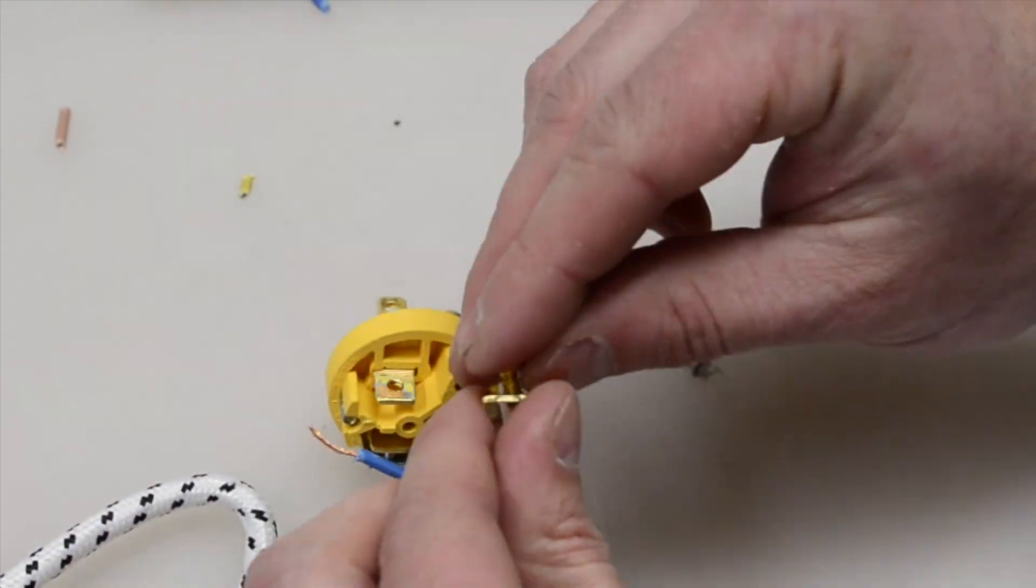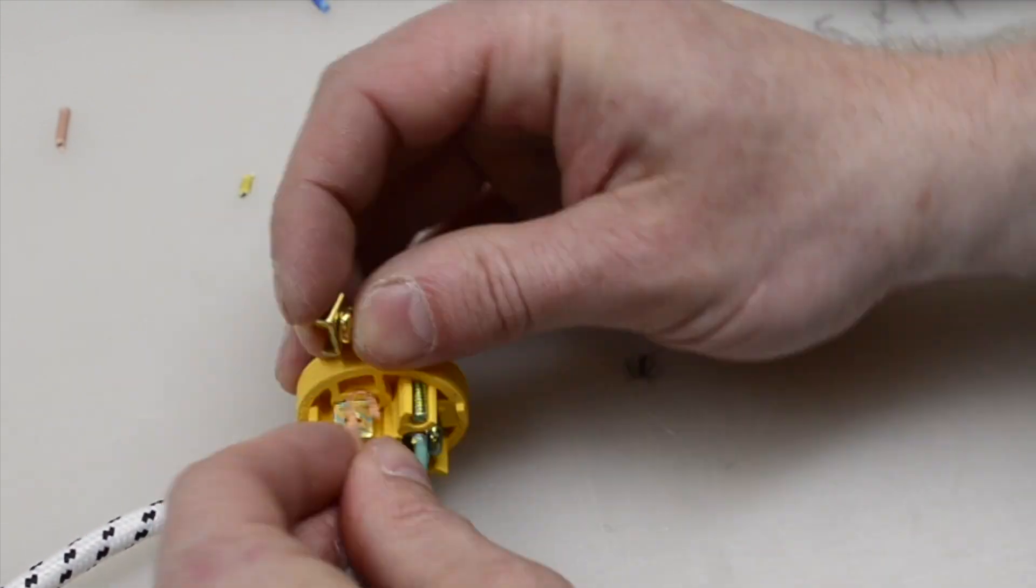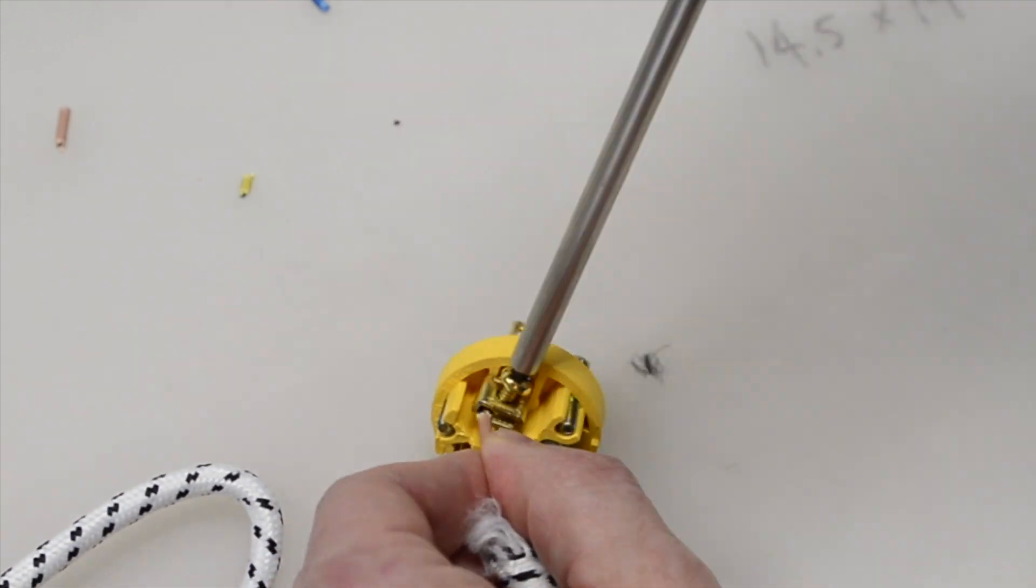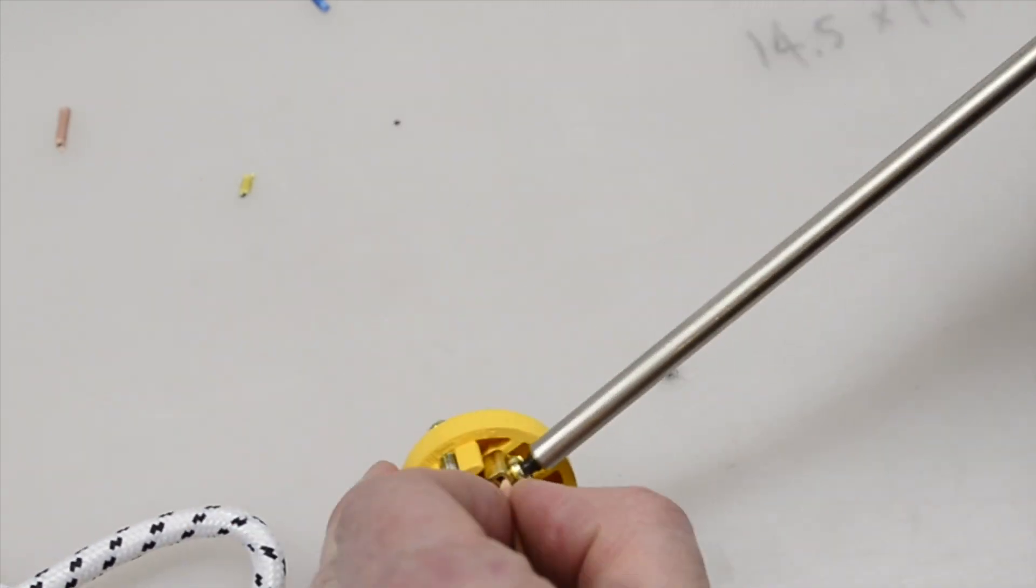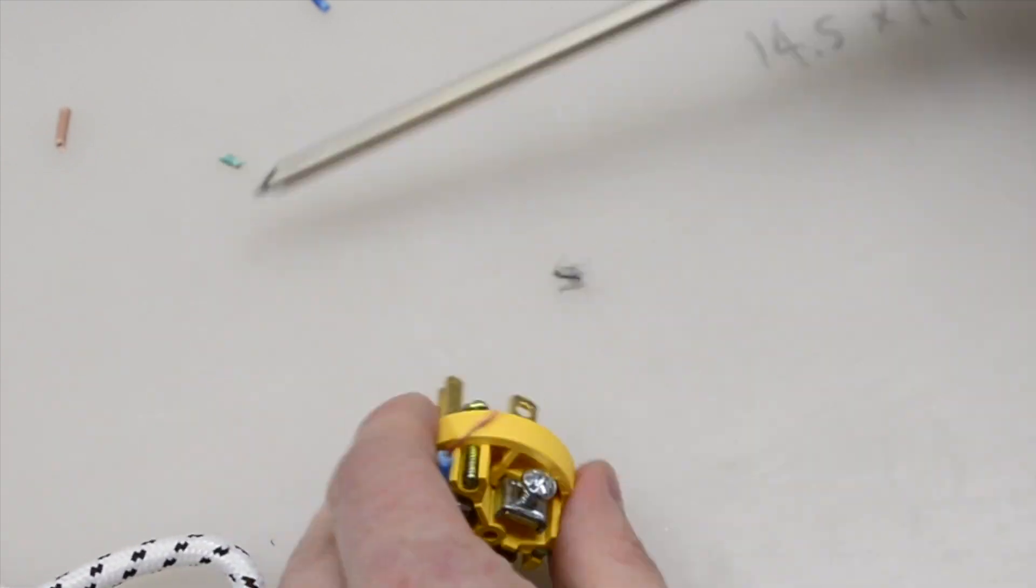In North America, the live wire connects to the smaller of the two flat prongs, the neutral wire connects to the larger flat prong, and if there's a ground wire it connects to the round prong.